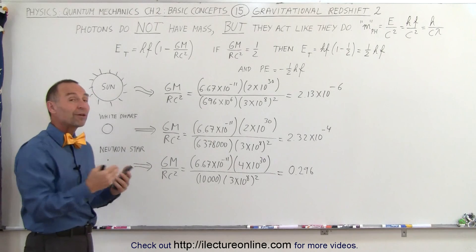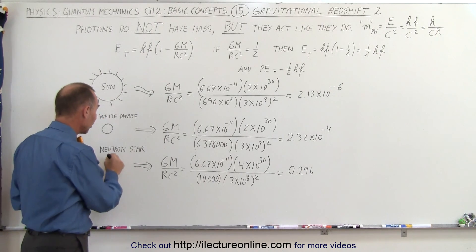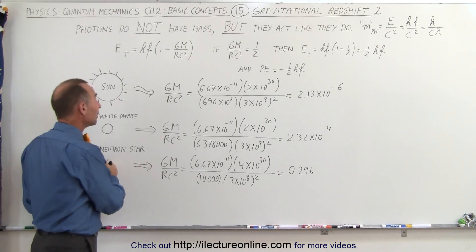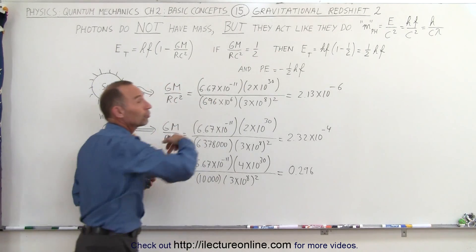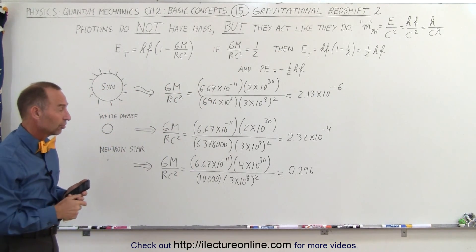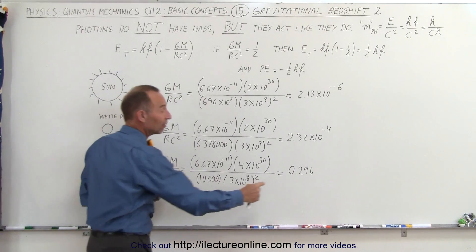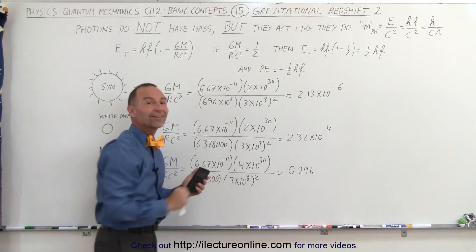In other words, photons can get away from a neutron star, but they lose a significant portion of their energy. Therefore, there will be a huge redshift for photons leaving neutron stars. That would be quite a shift, yet unless it's 0.5, they can still get away.